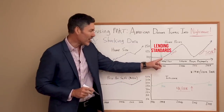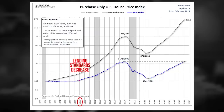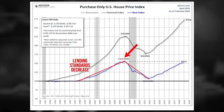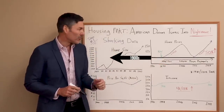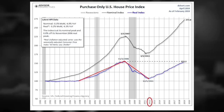We all know what happens. Lending standards decrease. Home prices go up. We get this massive bubble that peaks out in 2006 and comes crashing down to 2012. Oddly enough, you'll notice almost right on the historic trend line going back to 1998 and all the way back to 1900. Since 2012, prices have continued to go up.